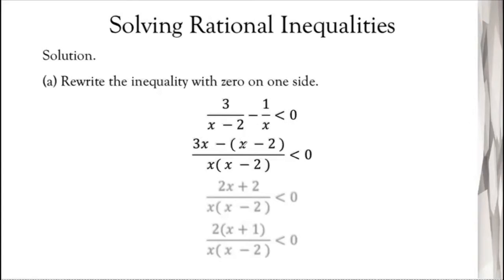For the second term in the numerator, x cancels out and (x-2) is multiplied by negative 1, giving negative(x-2). Simplifying the numerator, we get 3x minus x = 2x, and negative of negative 2 is positive 2, so we have 2x + 2 over x(x-2), which is less than 0. Now we have a single rational expression on the left side with less than 0 on the right. Our target now is to find what values of x make this zero.